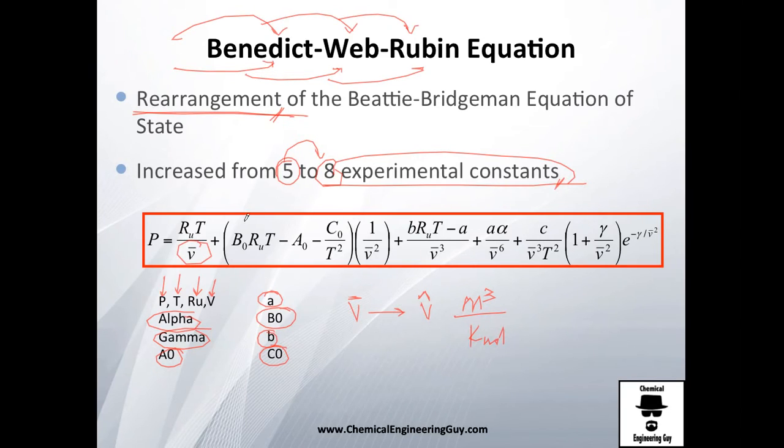So let me explain you very fast: universal gas constant, temperature, experimental constant, ideal gas constant, temperature, experimental constant, experimental constant divided by temperature to the square, and of course the temperature is in absolute guys, so don't mix with that.